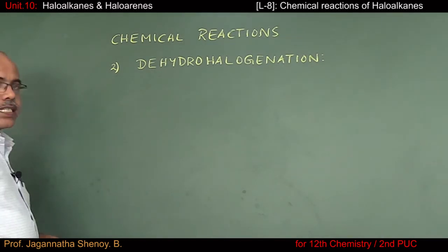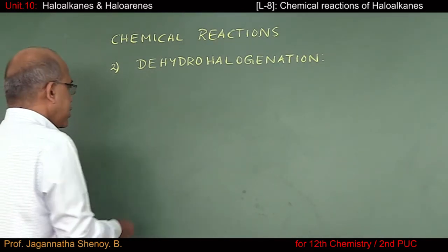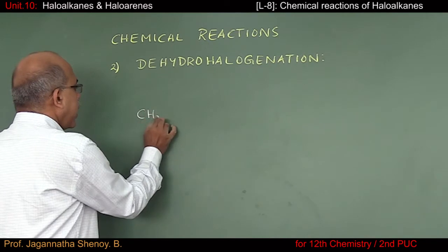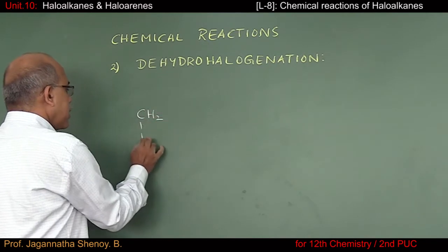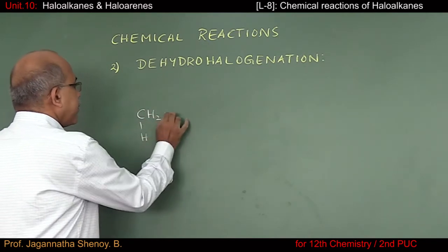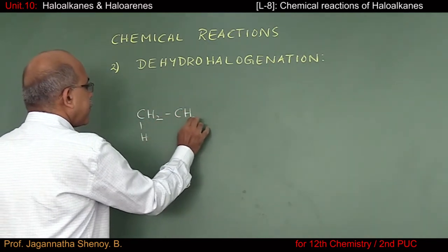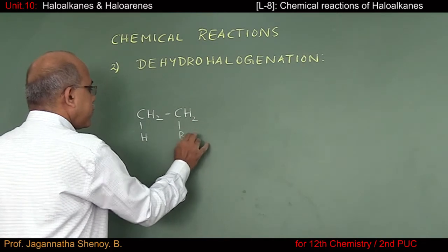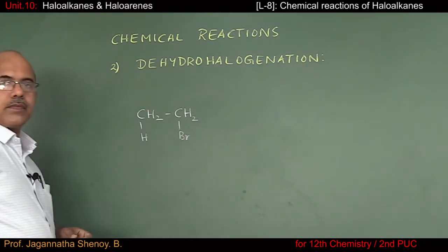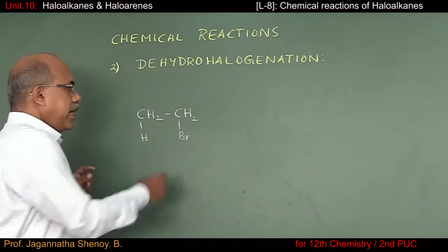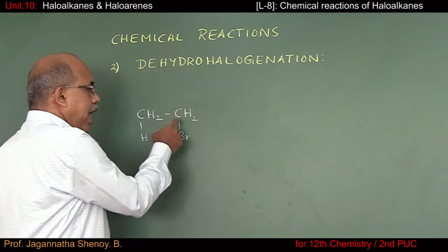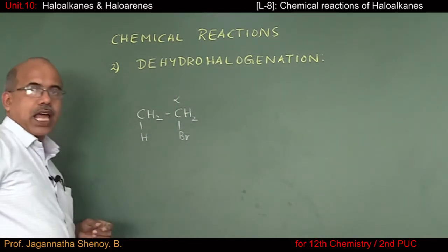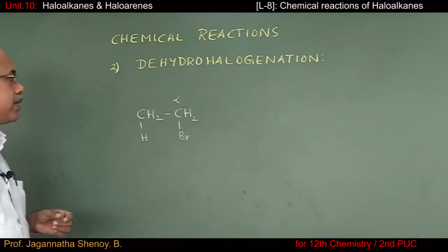In ethyl bromide, the carbon atom to which the halogen atom is attached is the alpha carbon atom. The next carbon atom will be the beta carbon atom.